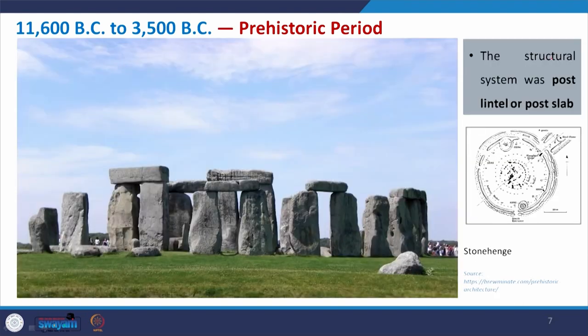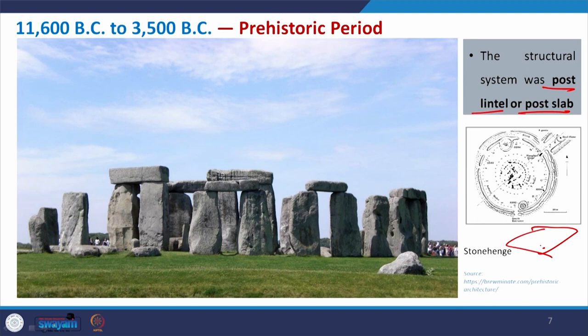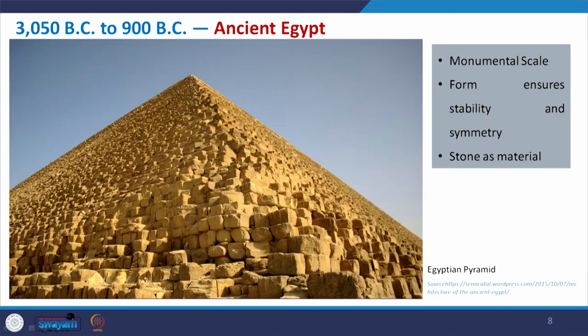Another prehistoric example is Stonehenge, following the same arrangement of post-lintel or post-slab structure. Depending on the span or area of the stone, we either call it a slab — when it has considerable area in length and width — or a lintel when it is just a piece like a beam. This is another example from the prehistoric period, and now we move on to Egypt.